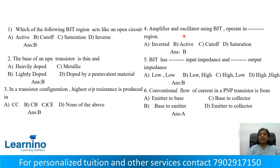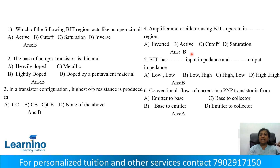Question number 4: Amplifier and oscillator using BJT operate in which region? Options: Active, Cut-off, Saturation, Inverter. BJT amplifier and oscillator operate in the active region. Correct answer is Option B: Active.